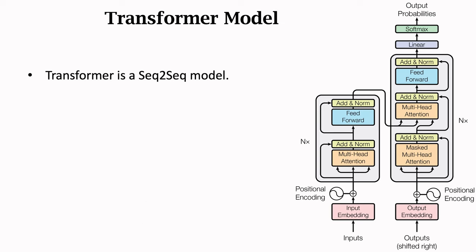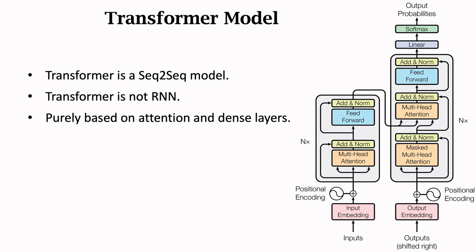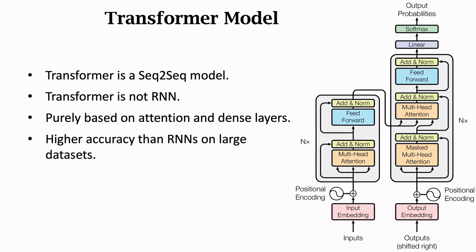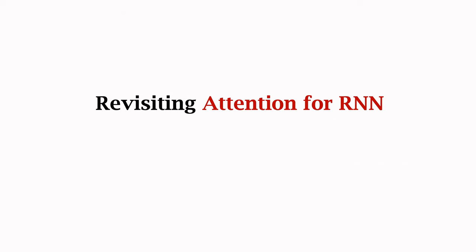Transformer is a sequence-to-sequence model. It has an encoder and a decoder. But transformer is not an RNN — there is no recurrence. It is purely based on attention and dense layers. Transformer is the state-of-the-art for most NLP tasks and is consistently more accurate than LSTM. You can remove RNNs while keeping attention, and the attention-based neural network can do whatever RNNs can do.